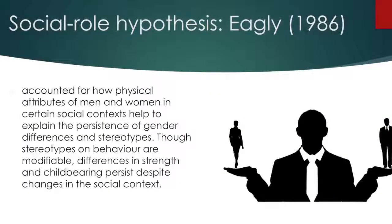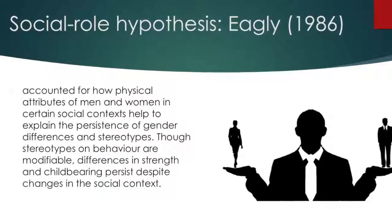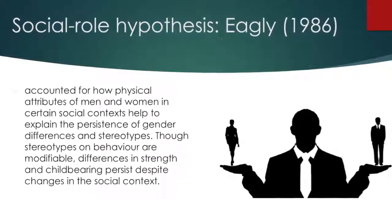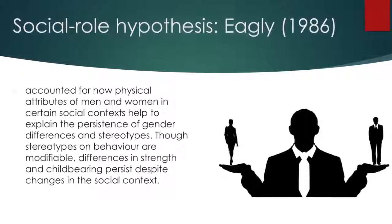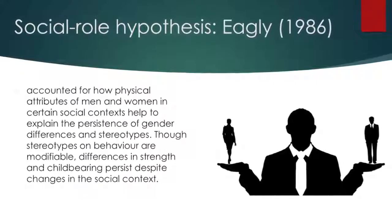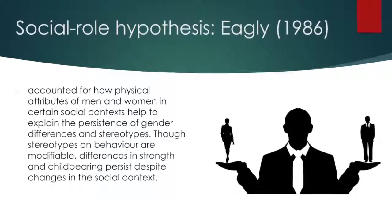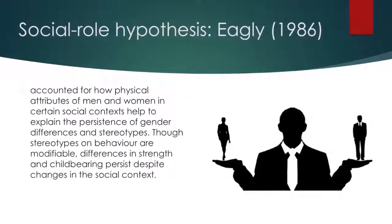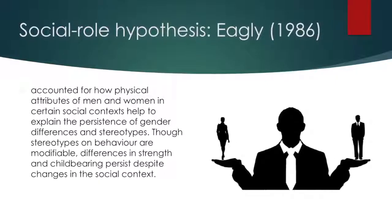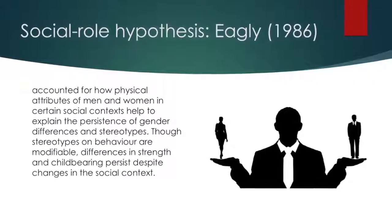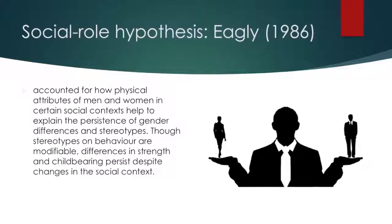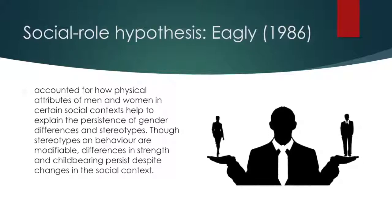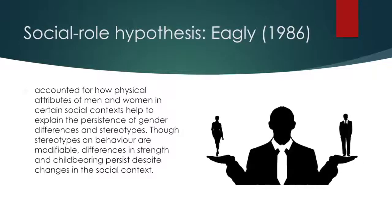Eagly in 1986 proposed the social role hypothesis and subsequent bio-social theory, which accounted for how physical attributes of men and women in certain social contexts helped to explain the persistence of gender differences and stereotypes. Though stereotypes on behavior are modifiable, differences in strength and childbearing persist despite changes in the social context.